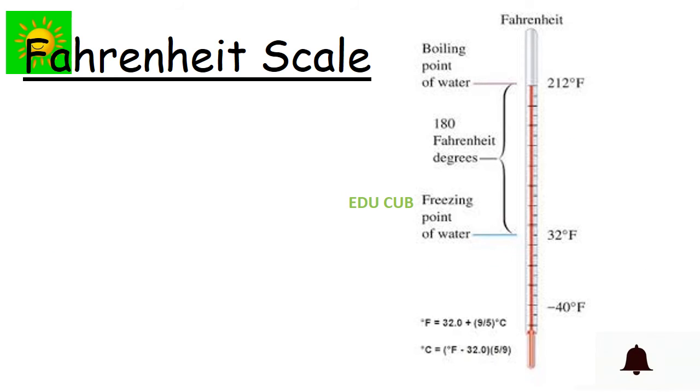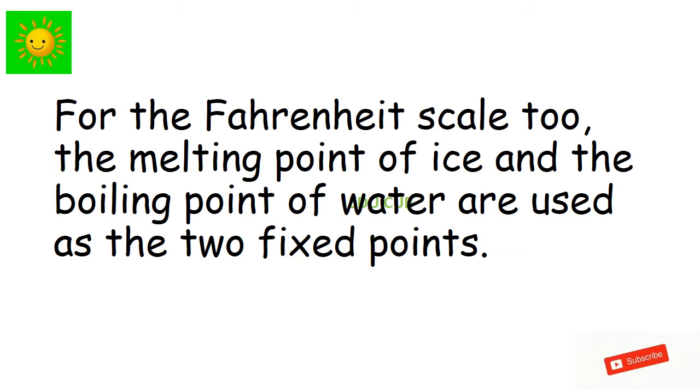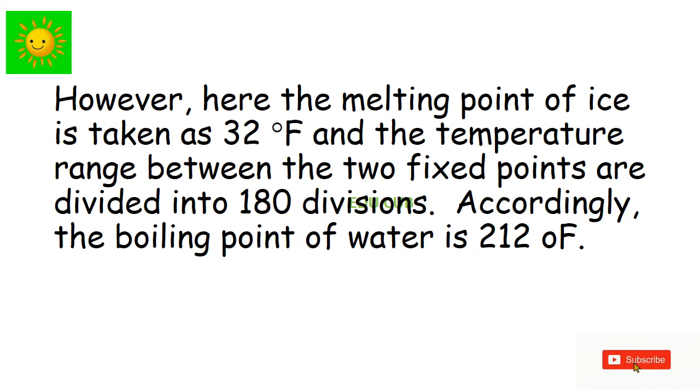Fahrenheit scale. For the Fahrenheit scale too, the melting point of ice and the boiling point of water are used as the two fixed points. However, here the melting point of ice is taken as 32°F and the temperature range between two fixed points are divided into 180 divisions. Accordingly, the boiling point of water is 212°F.